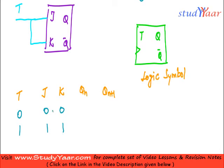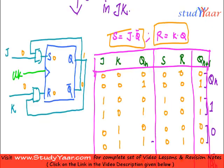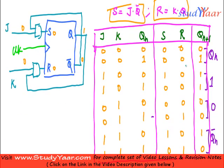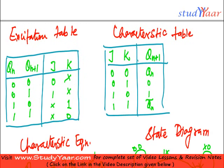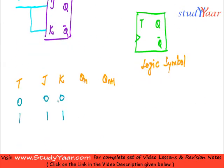Now we know that when J-k is 0, 0, what is your Q-n plus 1? Let's see from our table. When my J-k is 0, 0, Q-n plus 1 is Q-n. And when my J-k is 1, 1, Q-n plus 1 is Q-n-bar. Therefore, when my J-k is 0, 0, Q-n plus 1 is Q-n, and when my J-k is 1, 1, Q-n plus 1 is Q-n-bar.